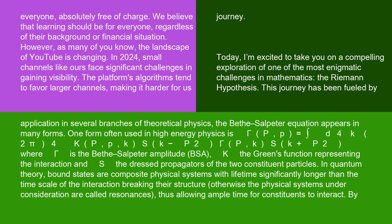One form often used in high-energy physics is gamma(p,P) equals integral d⁴k/(2π)⁴ K(P, pk) S(k - P/2) gamma(p,k) S(k + P/2).